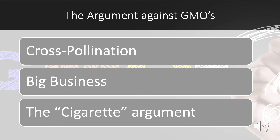The argument against GMOs: cross-pollination. Many people believe that cross-pollination from GMO crops creates superweeds that affect other plants and crops. But at the same time, GMO crops are under strict regulations by the three major organizations listed on the last slide to ensure all precautions are met and to prevent this from happening.